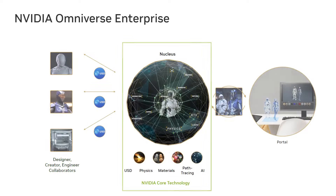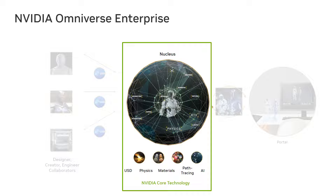In the center, we see the core of Omniverse: the Omniverse Nucleus server — the database and collaboration engine that enables the interchange of 3D assets and scene descriptions. This platform has been built from the ground up to be physically based and integrated with core NVIDIA technologies like physics, AI, and real-time ray and path tracing.